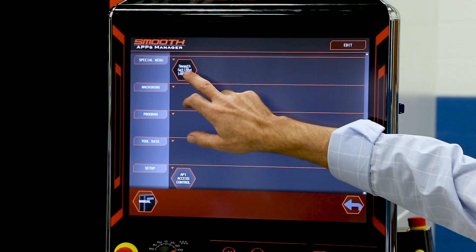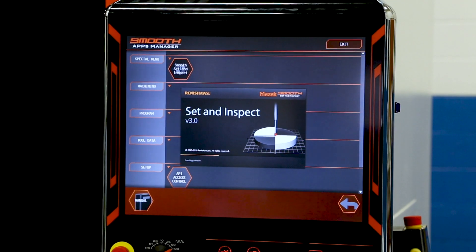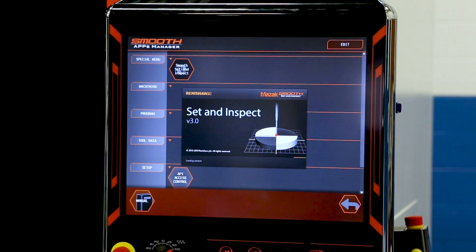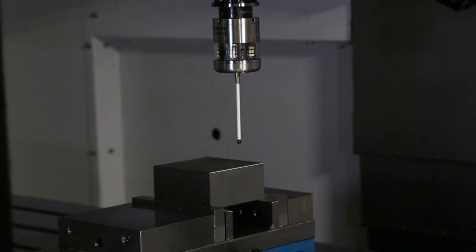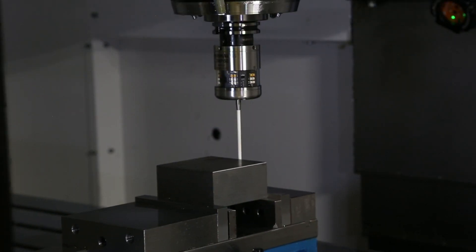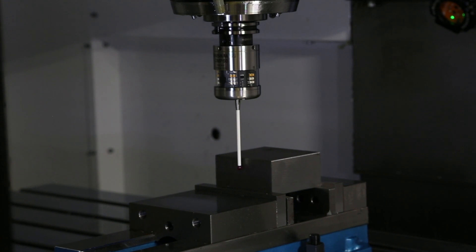Set and Inspect is a new advancement in probing and tool setting. It uses a graphical interface which takes all the keystrokes in danger of mistyping a number and damaging your probe out of the equation.